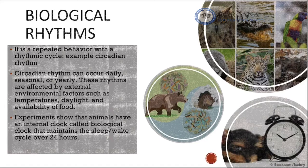An example is nocturnal organisms that are awake at night to seek food and sleep during the day. Reptiles in the desert are active at night because of the lower temperature, and inactive during the day due to the heat. Humans also have a circadian rhythm — the sleep-wake cycle — occurring over 24 hours, governed by an internal biological clock.